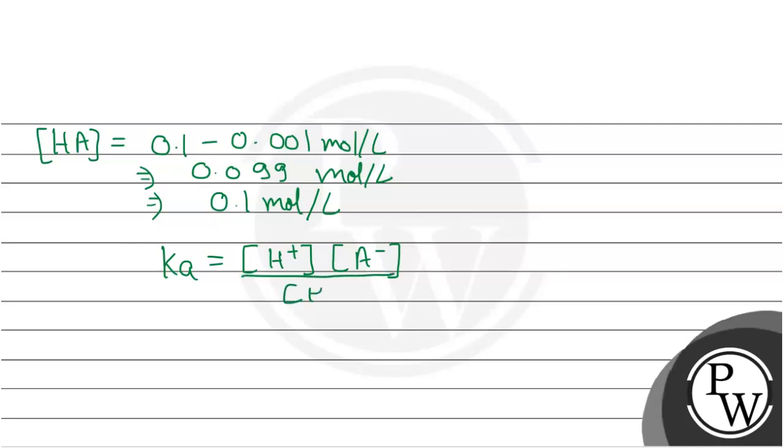Ka equals [H+] times [A-] divided by [HA]. The value will be 0.001 multiplied by 0.001, divided by 0.1.